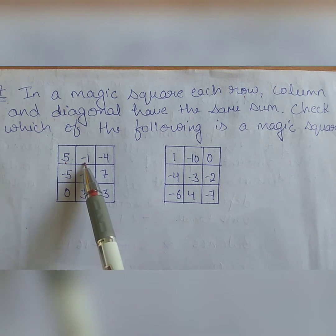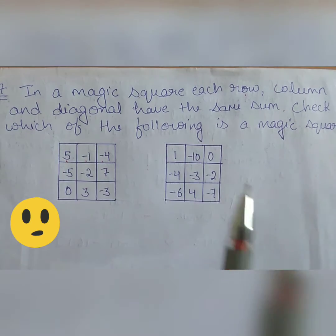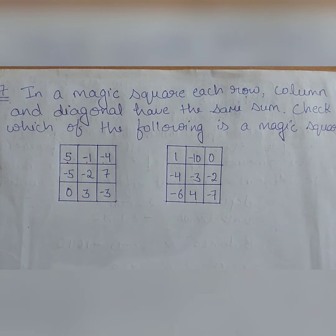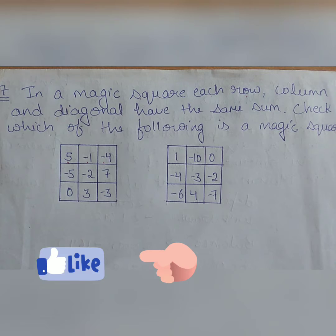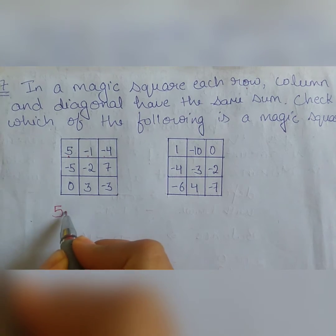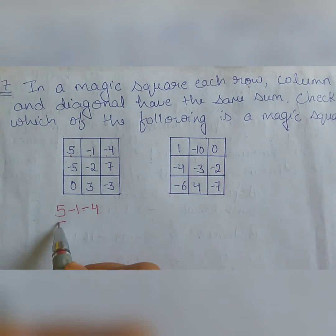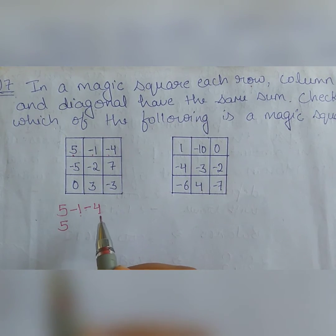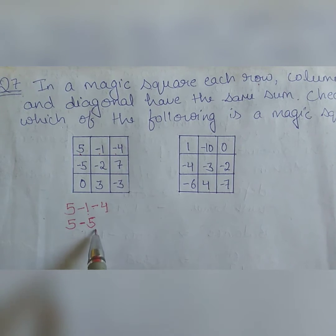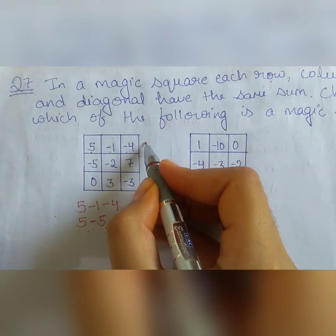Here 5 plus minus 1 plus minus 4. We will calculate each row and column and then see whether their sum is same or different. Then we will get to know that it is a magic square or not. So let's continue here. First 5 minus 1 minus 4. We will first add both the minus digits. Minus 4 and minus 1 becomes minus 5 and 5 minus 5 equals 0. So here we get 0.